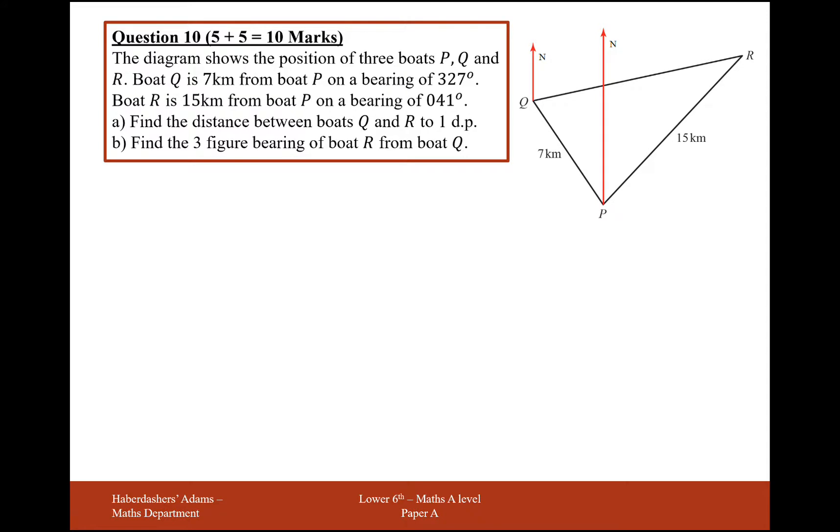The diagram shows the position of three boats, P, Q and R. Boat Q is 7km from boat P on a bearing of 327, so that means this bearing round to here, that's going to be 327. So what we'll have left over inside this angle here is going to be 33 degrees.